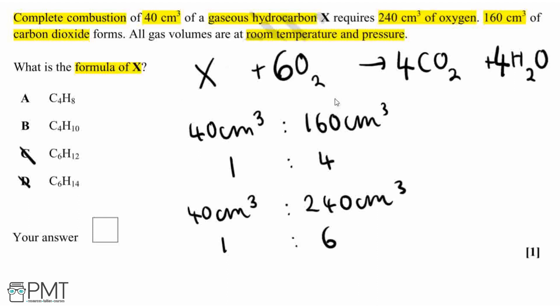Therefore, because the only source of hydrogen on the left-hand side is our hydrocarbon, that must mean that our hydrocarbon has to contain 8 hydrogens. Hence our answer is option A, C4H8.